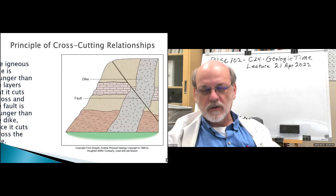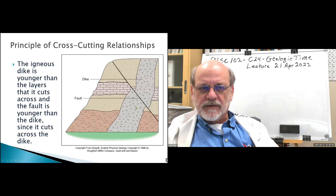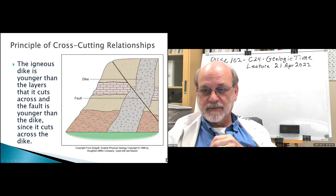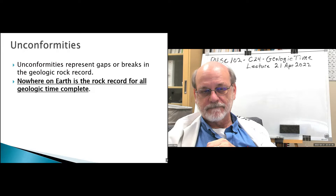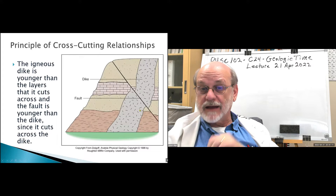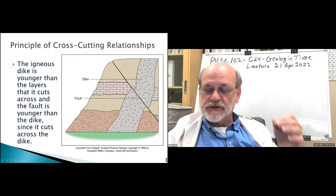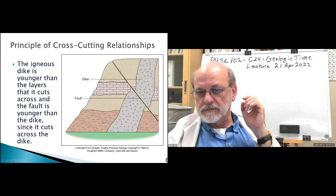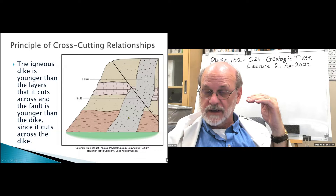Here's an example: this igneous dike is younger than the layers it cuts across — the dike is younger than any of these other layers. The fault that occurs across here is even younger than the dike. So in order: the oldest material is at the bottom, then progressively younger layers, then the dike is the next youngest, and the fault is the very youngest of all represented in that image.